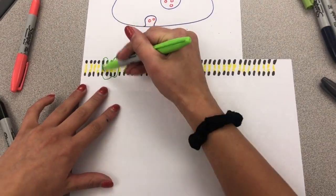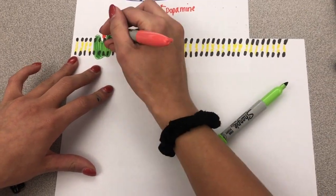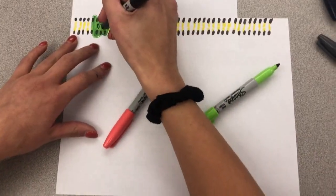Today we'll be talking about the dopamine pathway. Dopamine is released by a neurotransmitter and then binds to the D1 receptor.